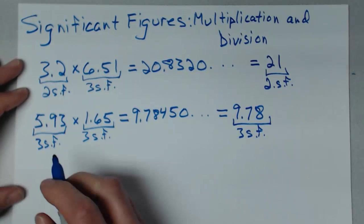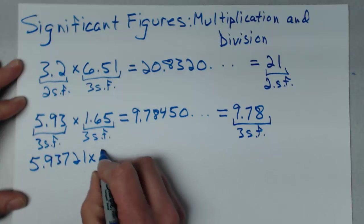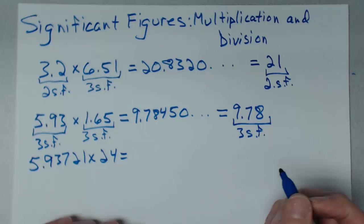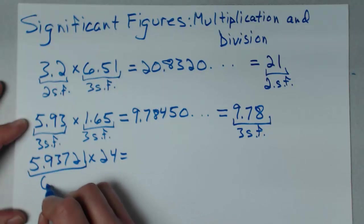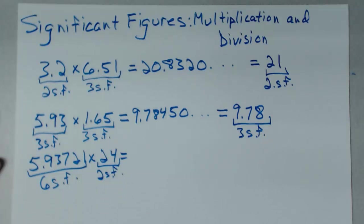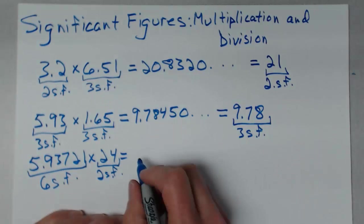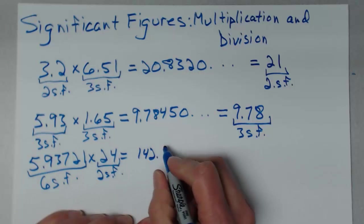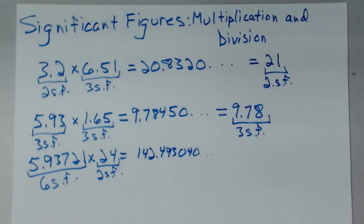Take a look at another one: 5.93721 times 24. Let's predict first what we'll have. There are six significant figures in 5.93721 but only two in 24. The uncertainty in 24 first shows up in that 4. When I multiply these together, I actually get 142.493040, but I can only keep two significant figures.